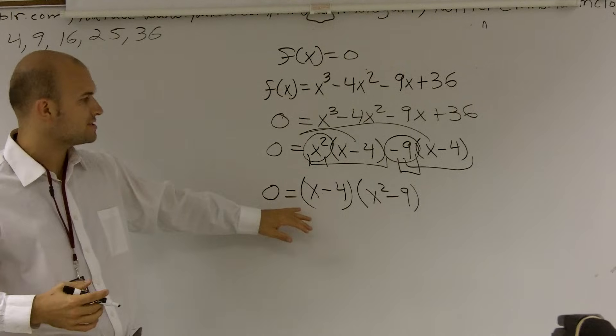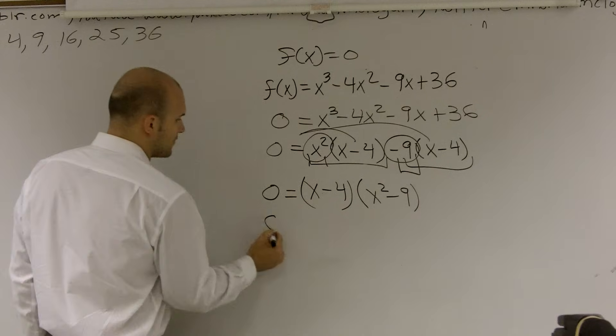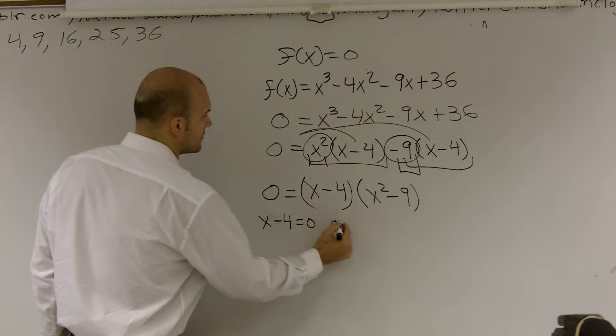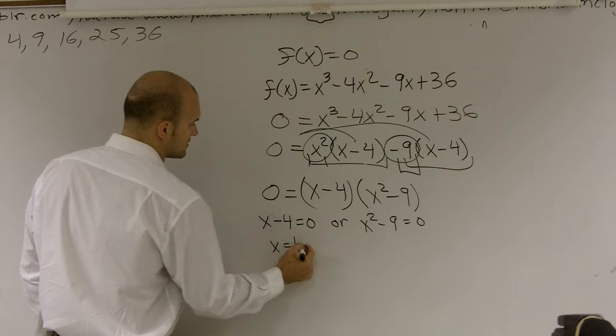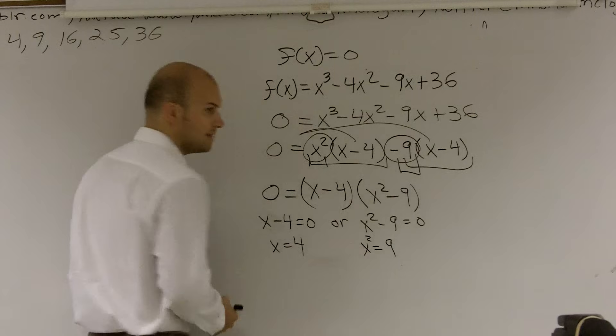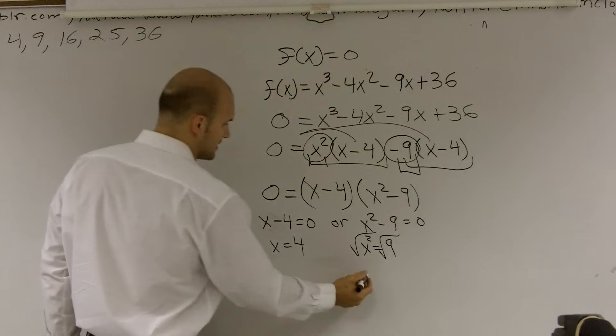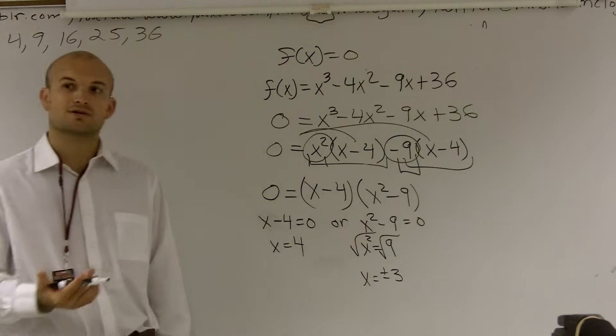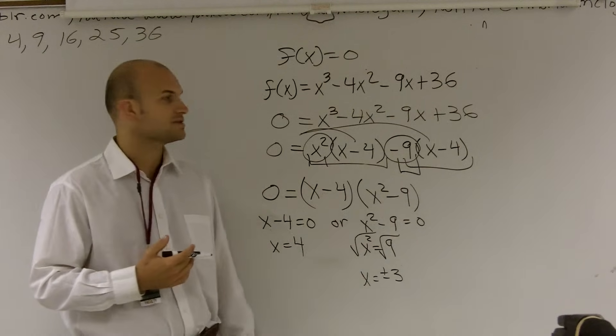Then we just have to finish this off by saying, remember, 0 equals x minus 4 or x squared minus 9. Therefore, we say either x minus 4 equals 0 or x squared minus 9 equals 0. Therefore, when solving for x, x equals 4 or x squared equals 9. Make sure now we have to take the square root. Whenever you're taking the square root, remember we have a positive and negative. So x equals plus or minus 3. So therefore, the zeros for this function is going to be at when x equals 4 or x equals plus or minus 3.